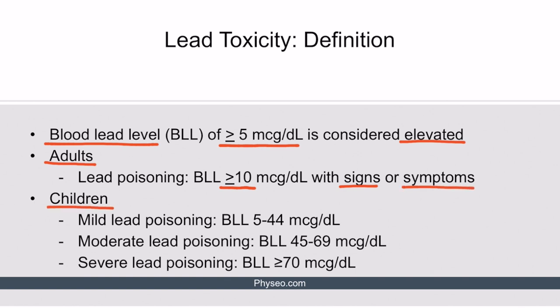In children, the diagnosis of lead poisoning is divided into mild, moderate, and severe, and it hinges predominantly on the blood lead levels at the time of diagnosis. Mild lead poisoning is defined by blood lead levels between 5 and 44. Moderate is defined as a level between 45 and 69, and severe is equal to or greater than 70. It's important to memorize these blood lead levels because the appropriate treatment depends entirely on that concentration level.